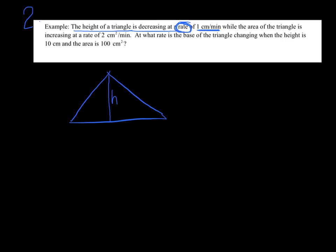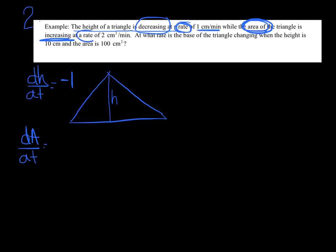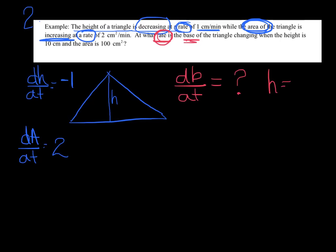So I know dH/dt equals... did you catch whether it's positive or negative? That word 'decreasing' tells you it's negative 1 centimeters per minute. While the area is increasing, I've got dA/dt at a rate of 2 centimeters squared per minute. And here's the actual question: at what rate is the base of the triangle changing? So we're asking for dB/dt, specifically when the height equals 10 and the area equals 100.